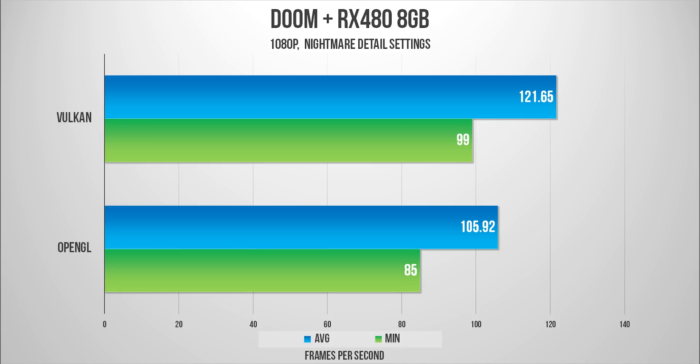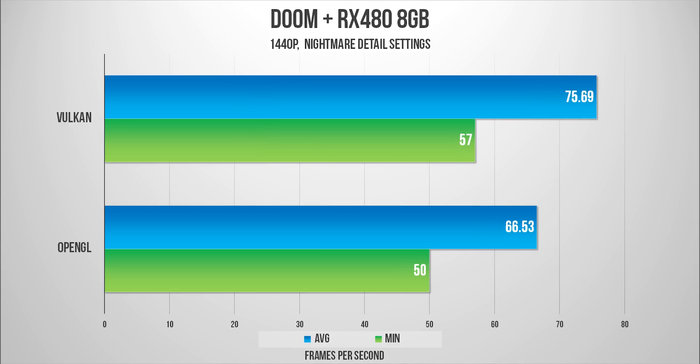To put Vulkan performance in perspective for the RX 480, some gameplay averages were crunched up by Sky and Montreal to give us this graph at 1080p, which shows a nice boost for averages that is consistent with the minimums as well. And the same goes for 1440p results with a slightly lower bump in FPS percentage-wise.